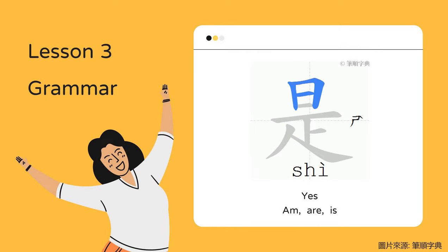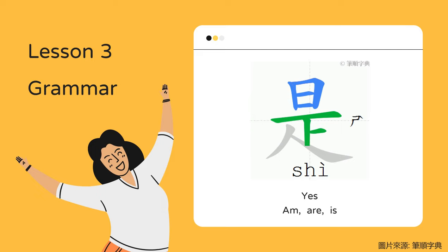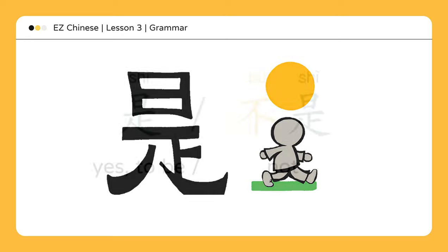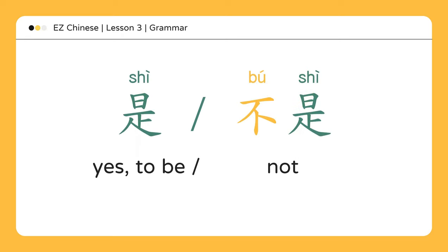Lesson 3 Grammar. 是 means 'yes' and 'is' — to be. 是 is a relational verb connecting subjects and objects. Someone walking under the sun is naturally under the sun and never above it, of course. 是 implies the following: positive, existing, certain, determined.